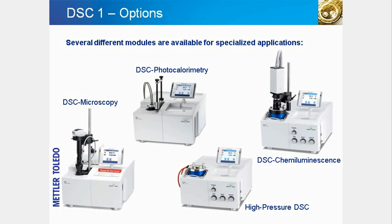DSC chemiluminescence allows you to detect the light emitted by a chemical reaction — for example, the chemiluminescence originating from oxidative degradation processes in polymers. This allows you to study the effect of stabilizers in polymers. In the food and pharmaceutical industries, chemiluminescence is used to obtain information about the stability of various products such as oils or fats.